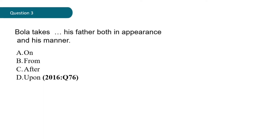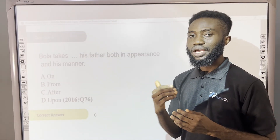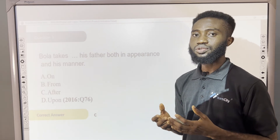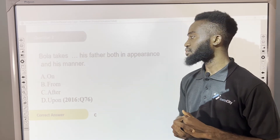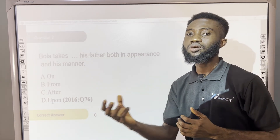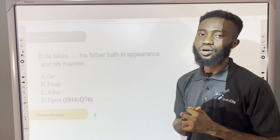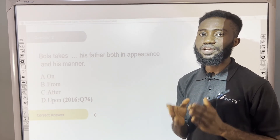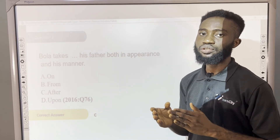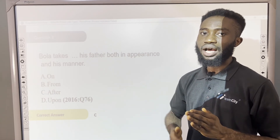The correct answer is take after. To take after is to resemble. To take on is to digest or put on something. To take from is to collect. It is not take upon. Take after is the correct phrasal verb for this expression because it shows that Bola resembles his father.